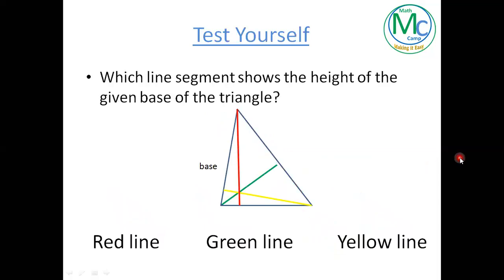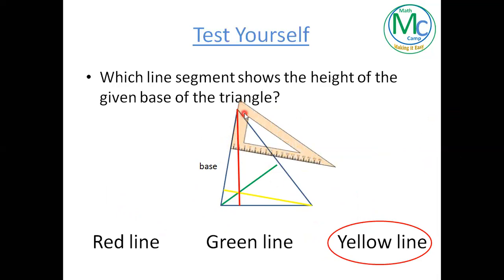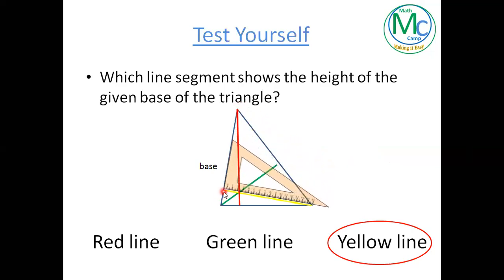Now you have another question — answer this and select your best option. The height for this base is the yellow line. I'm going to show this using the set square: the base of the set square is over the base of the triangle, then start sliding and stop where it touches the vertex. So this is the height for this base.